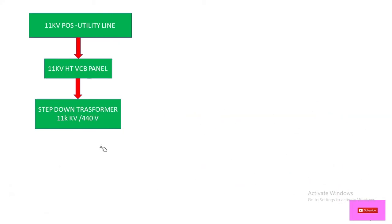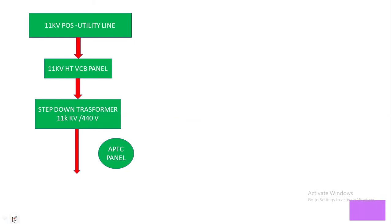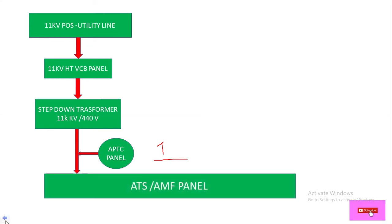From the secondary side of the transformer, the power is fed to our LT panel. To improve the power factor of the system, we use a PFC panel — an automatic power factor correction panel — which maintains the power factor near to 1. This panel is connected in parallel to the utility line.